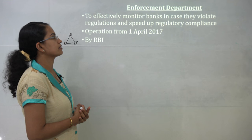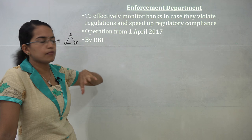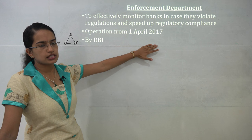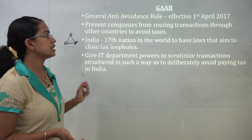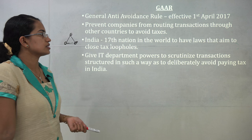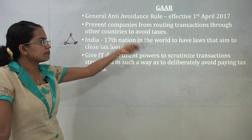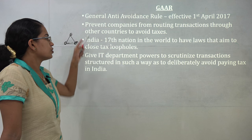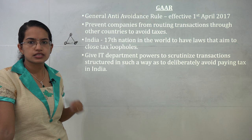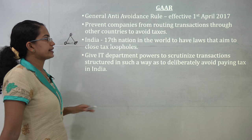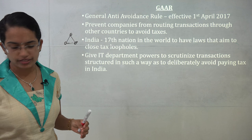Establishment of an Enforcement Department to monitor banks in case they violate rules and bring speedy regulatory compliance, operational from 1st April 2017, released by RBI. The General Anti-Avoidance Rule (GAAR) is effective from 1st April 2017. This prevents companies from routing their transactions through foreign nationals and bringing money into India to avoid taxation. The IT department has the power to scrutinize any such transaction deliberately structured to avoid taxation. India is the 17th nation in the world to have laws addressing closed tax loopholes.